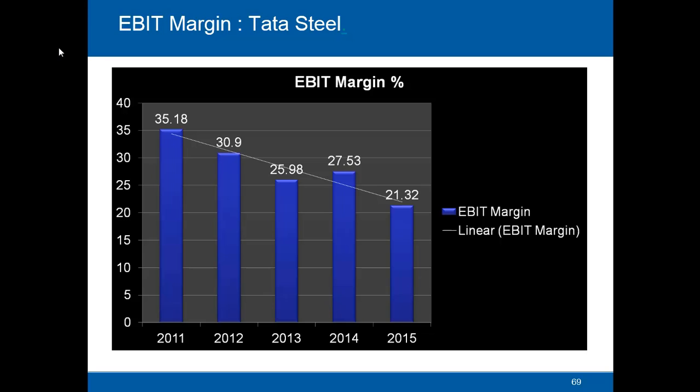Looking at the EBIT margin graph of Tata Steel from 2011 to 2015, it clearly shows that the EBIT margin has been shrinking. In 2011 the margin was 35%, then declined to 30% in 2012, came down to 26% in 2013, slightly went up to 27% in 2014, and finally dropped to 21% in 2015. The reason for this drop is perhaps a slump in steel demand, softening of selling prices, and possibly an increase in the input cost of manufacturing steel.